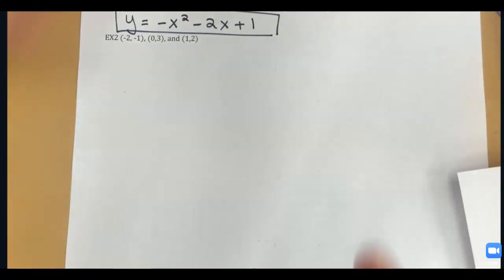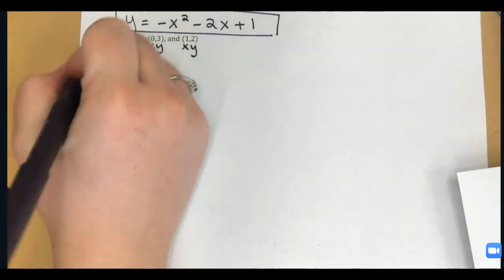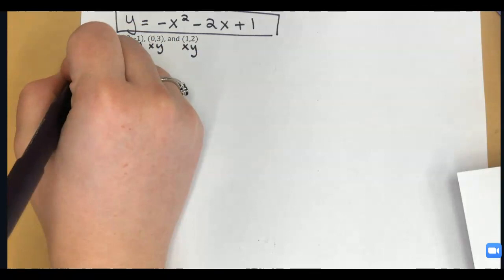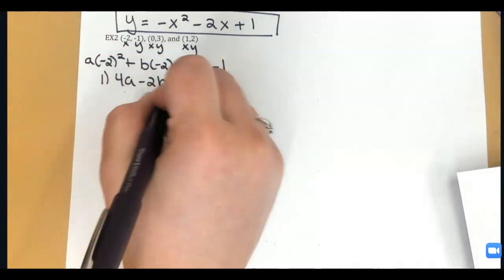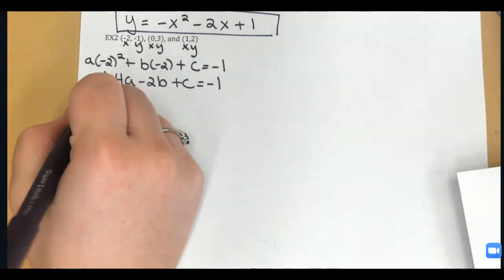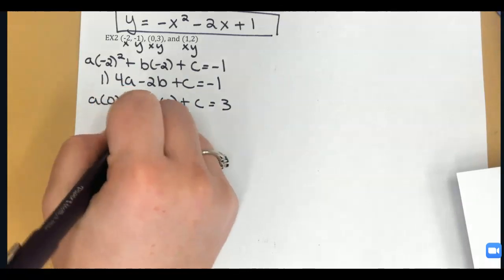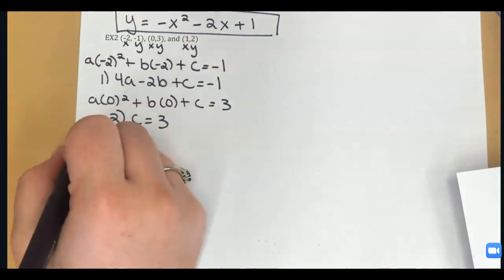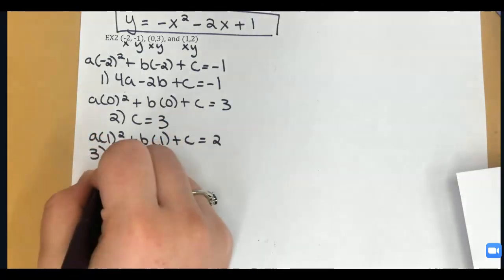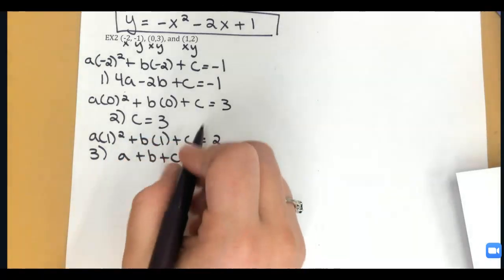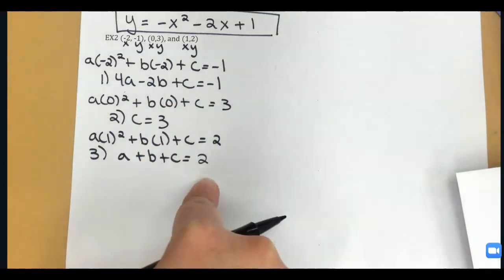On the second example, I'll follow the same steps, starting by making three equations from my XY pairs. From the first point: negative 2 squared times A plus B times negative 2 plus C equals negative 1, giving 4A minus 2B plus C equals negative 1. For equation 2, X is 0 again, so C equals 3 directly. For equation 3, I get A plus B plus C equals 2. Since C equals 3, I'll plug that into equations 1 and 3 to get a two-variable system.